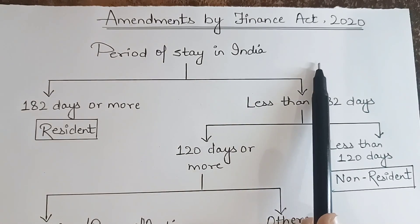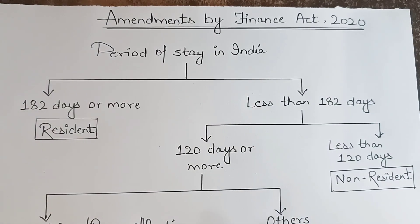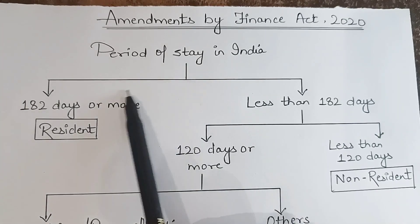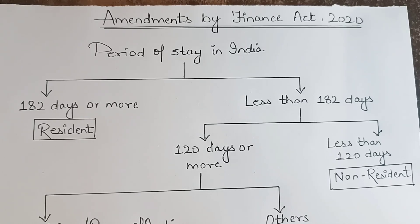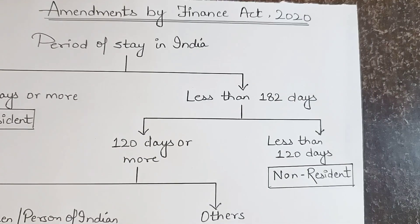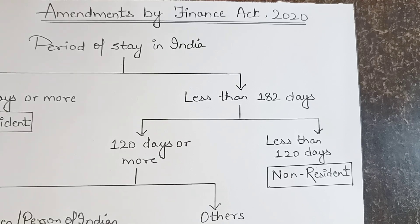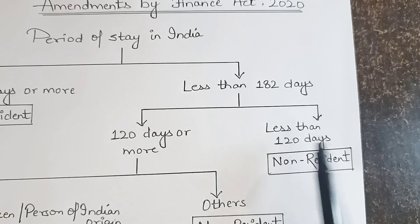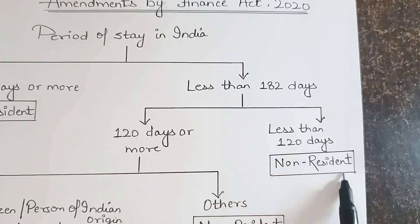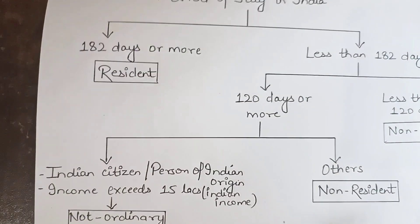Now coming to the last part — the amendments by the Finance Act 2020. This is a very major amendment related to residential status. If a person stays in India for 182 days or more, he is straightforwardly a resident, without any condition. But if he stays less than 182 days, we check: did he stay for at least 120 days? If he stayed less than even 120 days in India, then we will directly consider him a non-resident or NRI.